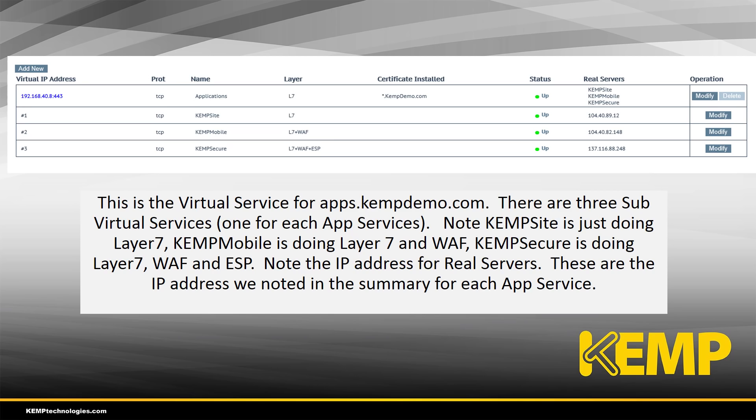Looking now at the virtual service configuration within the Loadmaster for apps.kemptdemo.com, we set up three sub-virtual services, one for each of the app services that exist. The Kemp site is doing basic layer 7 traffic. The Kemp mobile site is configured with layer 7 and the application firewall, and the Kemp secure site is configured with WAF and ESP as well. The IP addresses shown for the real servers are the IP addresses noted in the earlier slides.